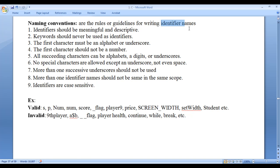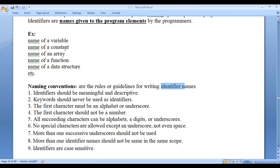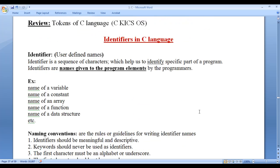So while naming any identifier - that means while naming a variable, constant, array, function, or data structure - you must follow these naming conventions. I hope you have clearly understood what identifiers are. Remember that an identifier is a sequence of characters which helps us identify a specific part of a program. Identifiers are names given to program elements like variables, constants, arrays, functions, and data structures by the programmers. User-defined names are called identifiers.